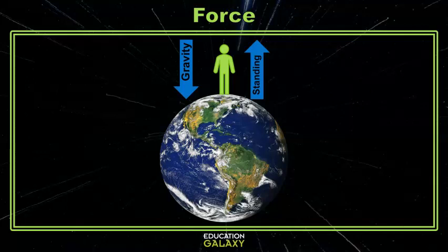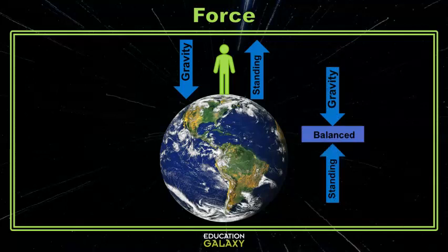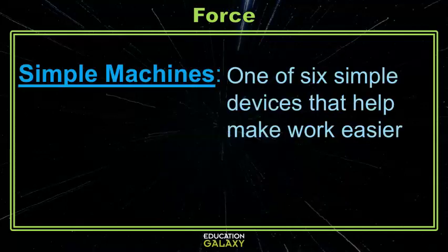You're not moving anywhere, and so these forces are balanced. We can also use simple machines to make motion easier. Simple machines are devices that multiply the amount of force to make work easier. There are six different kinds of simple machines.